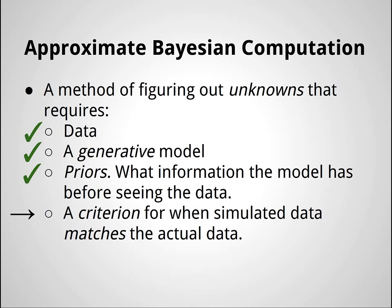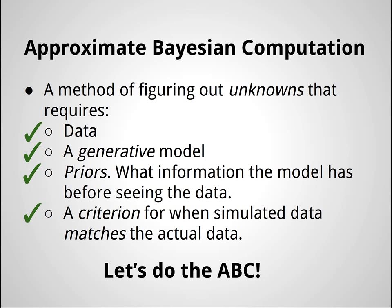Finally we need a criterion for when simulated data from our generative model matches the actual data. Here is where you might have to think a little bit when doing approximate Bayesian computation. But we have a simple model so we can use a simple criterion — we require an exact match with the actual data. We'll consider it a match when the simulated data exactly matches the actual data. Right, now we have everything we need. Now we are ready to do the ABC.